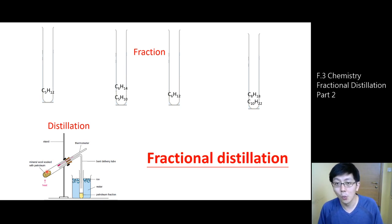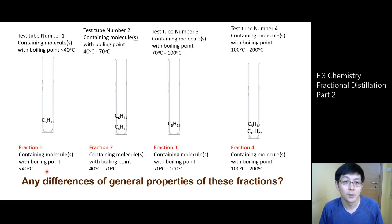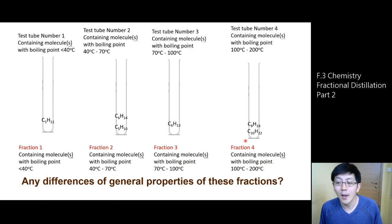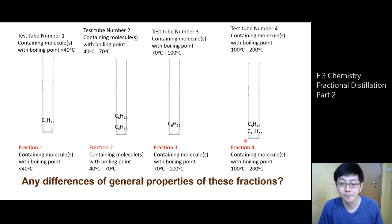So why do we need to do fractional distillation of crude oil? As introduced in the last video, this is to make crude oil more useful. We separate them into different fractions, and these fractions actually have different general properties. In this video, we are going to compare these general properties — what are the differences among these four fractions?